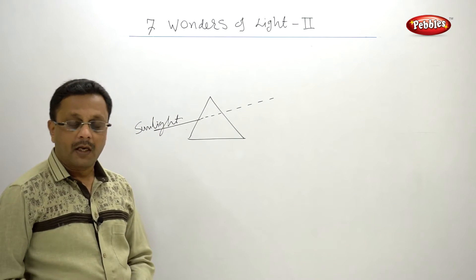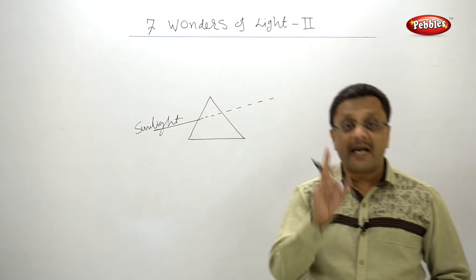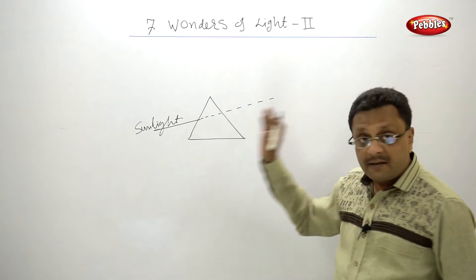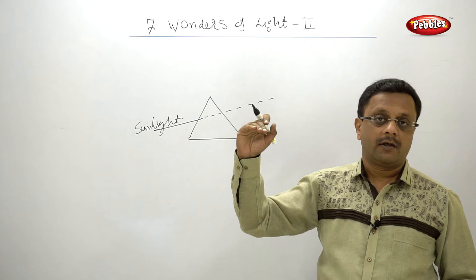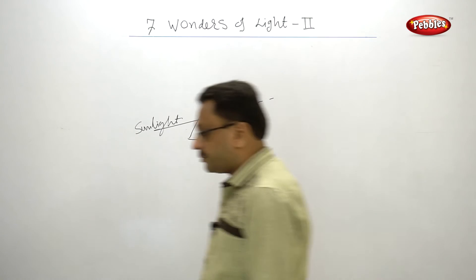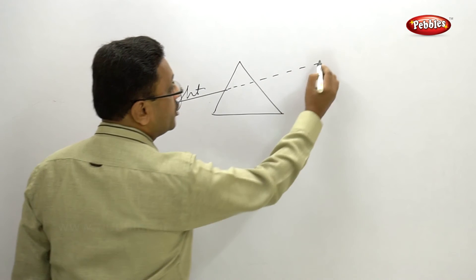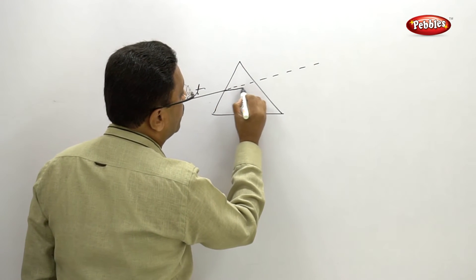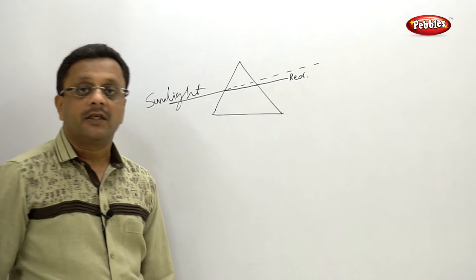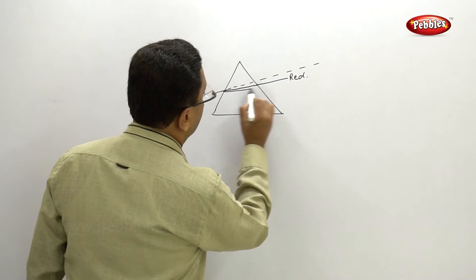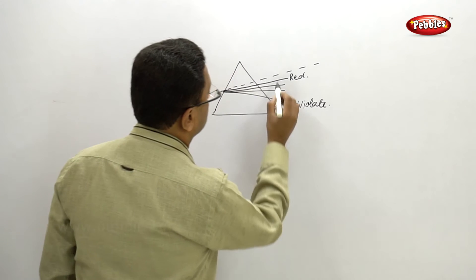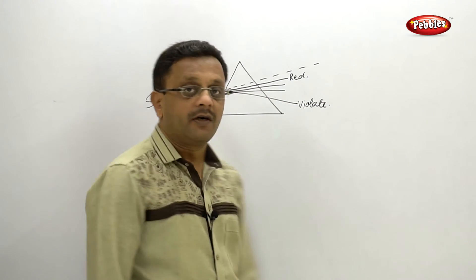Seven colors are there, but every color does not bend with the same angle. The red color deviates least, and the violet color deviates maximum. That is why from the prism, where the ray should actually pass straight, first we get the red color because its angle of deviation is minimum, and after that we get different colors, and finally the violet color deflects maximum.